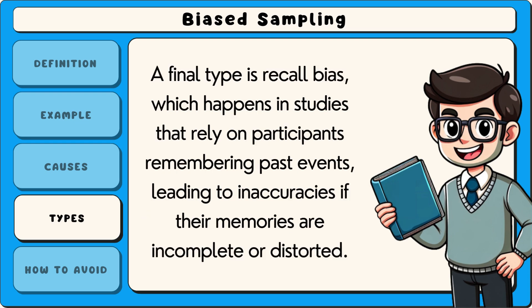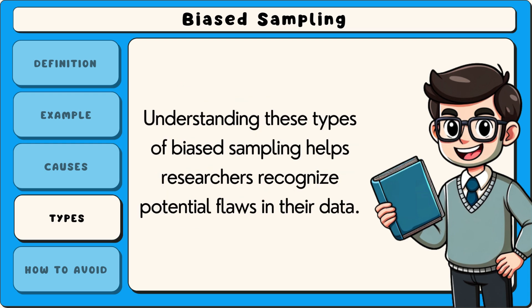A final type is recall bias, which happens in studies that rely on participants remembering past events, leading to inaccuracies if their memories are incomplete or distorted. Understanding these types of biased sampling helps researchers recognise potential flaws in their data.